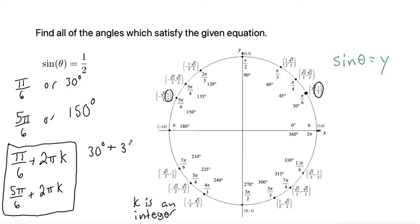So instead of adding 2 pi k, we add 360 k, because every time we go back around, it's another 360 degrees. And same idea for 150 plus 360 k.